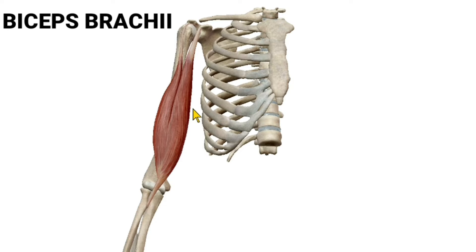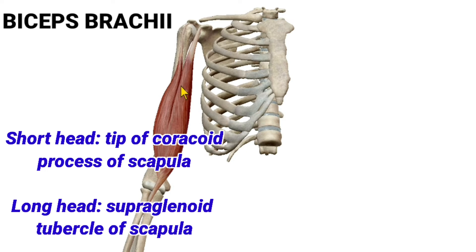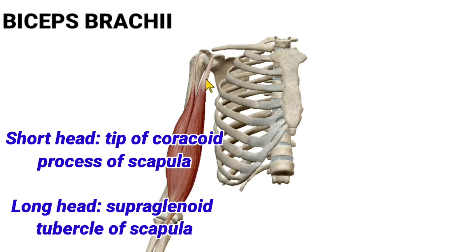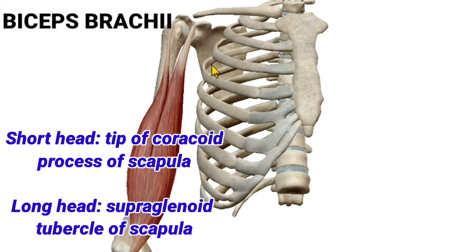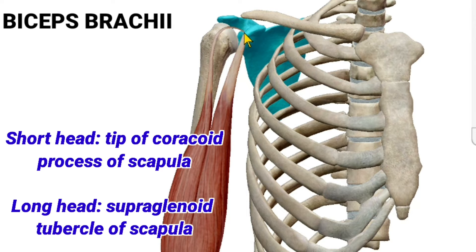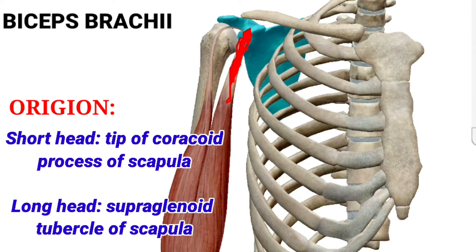About the attachment of biceps brachii muscle: it has origin from two heads — one is the short head and another is the long head. The short head originates from the tip of the coracoid process. Here is the scapula and this is the coracoid process of scapula, from which the short head of biceps brachii originates.